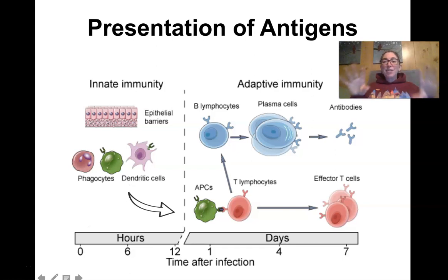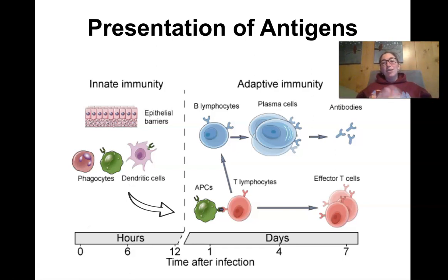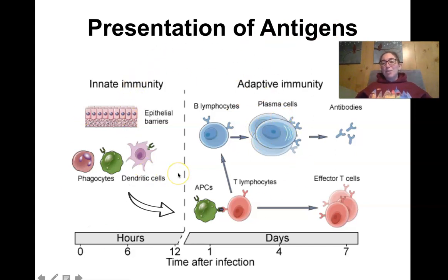So we've talked about lymphocyte development — how B cells and T cells develop and what's on their surface. Now it's time for them to go out into the world and become activated. They get activated when they are presented with antigen. B cells and T cells can't just recognize antigen floating around the body; they have to be presented with it. Let's back up to the first and second lines of defense: you get a cut or a splinter in your finger, the piece of wood goes through the epithelial barrier — that's the first line of defense.